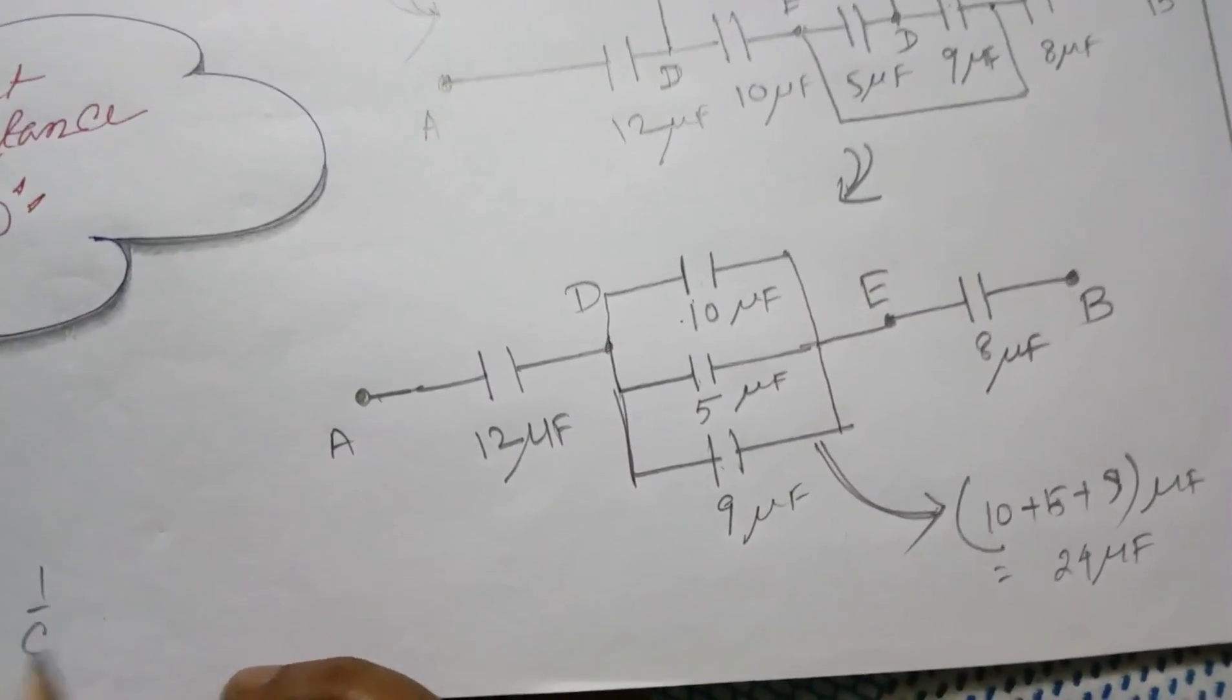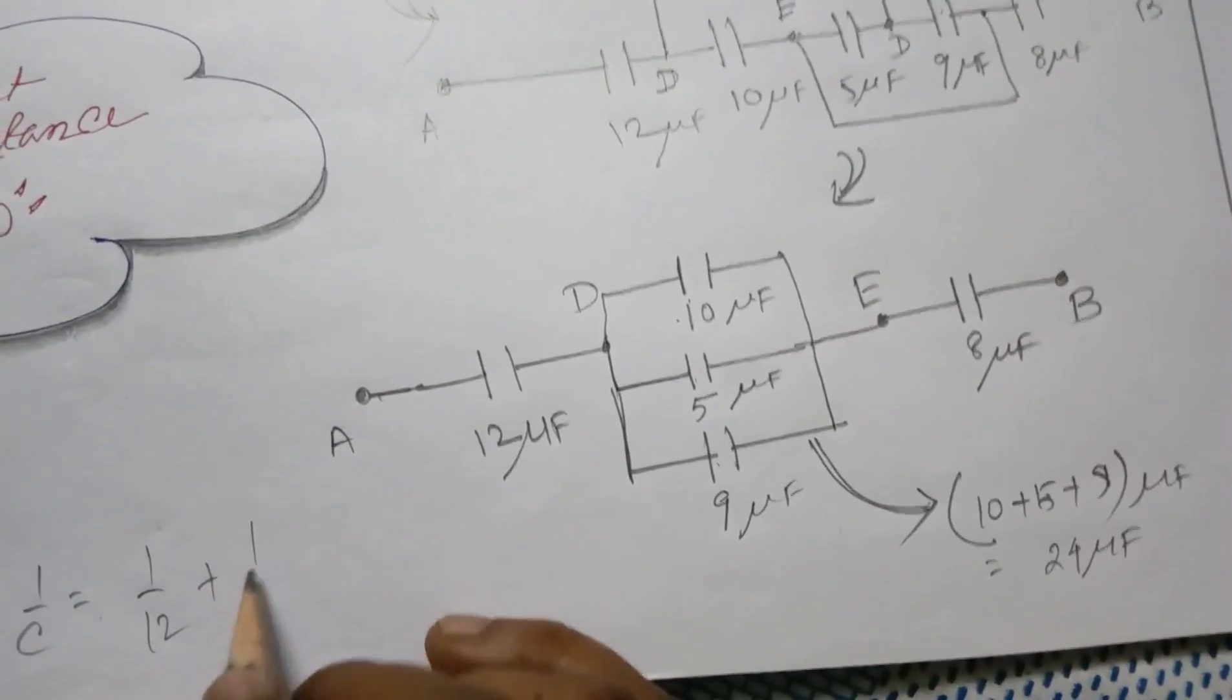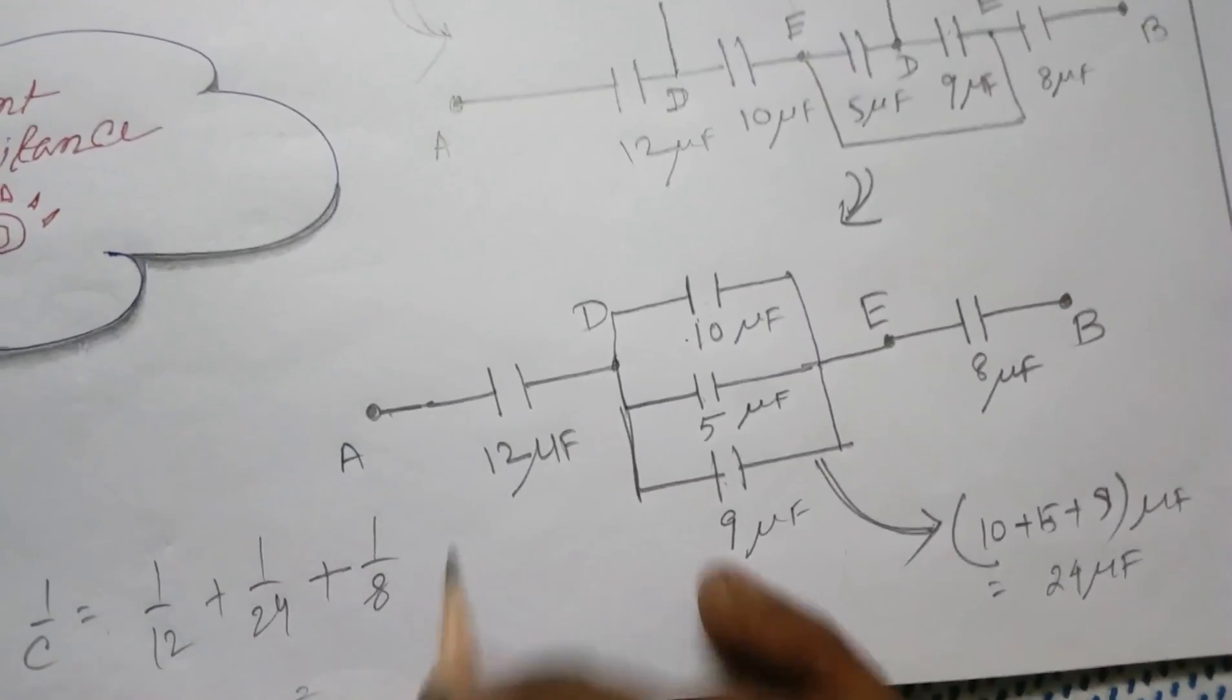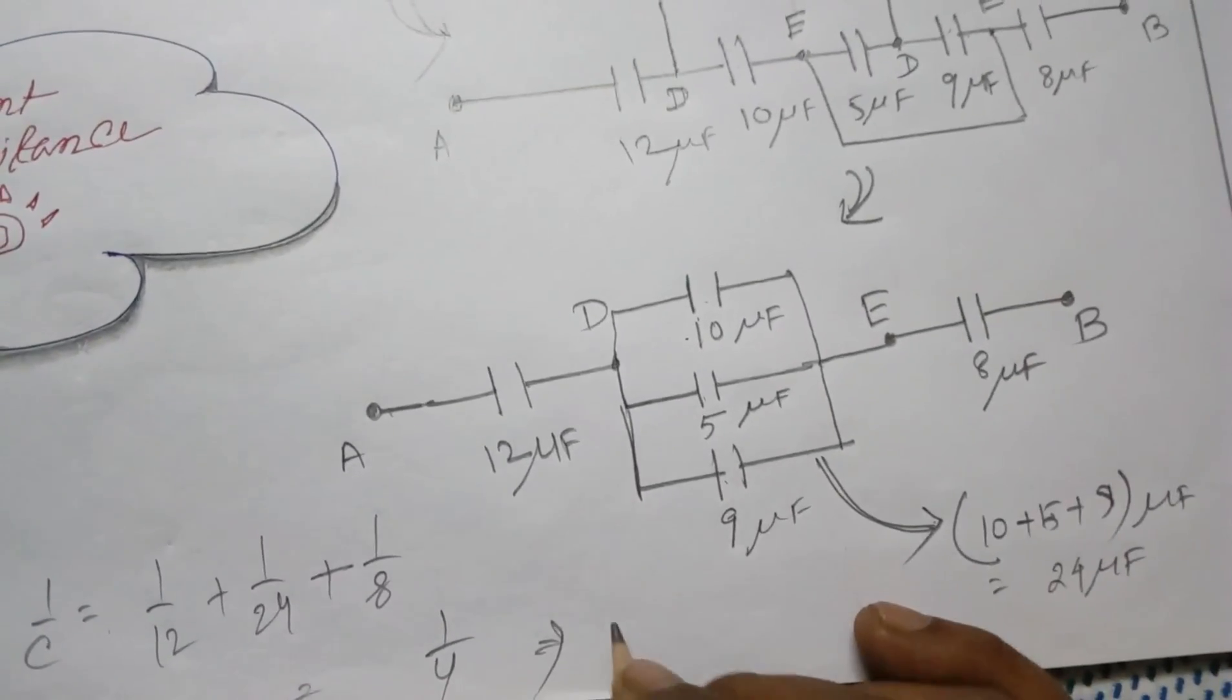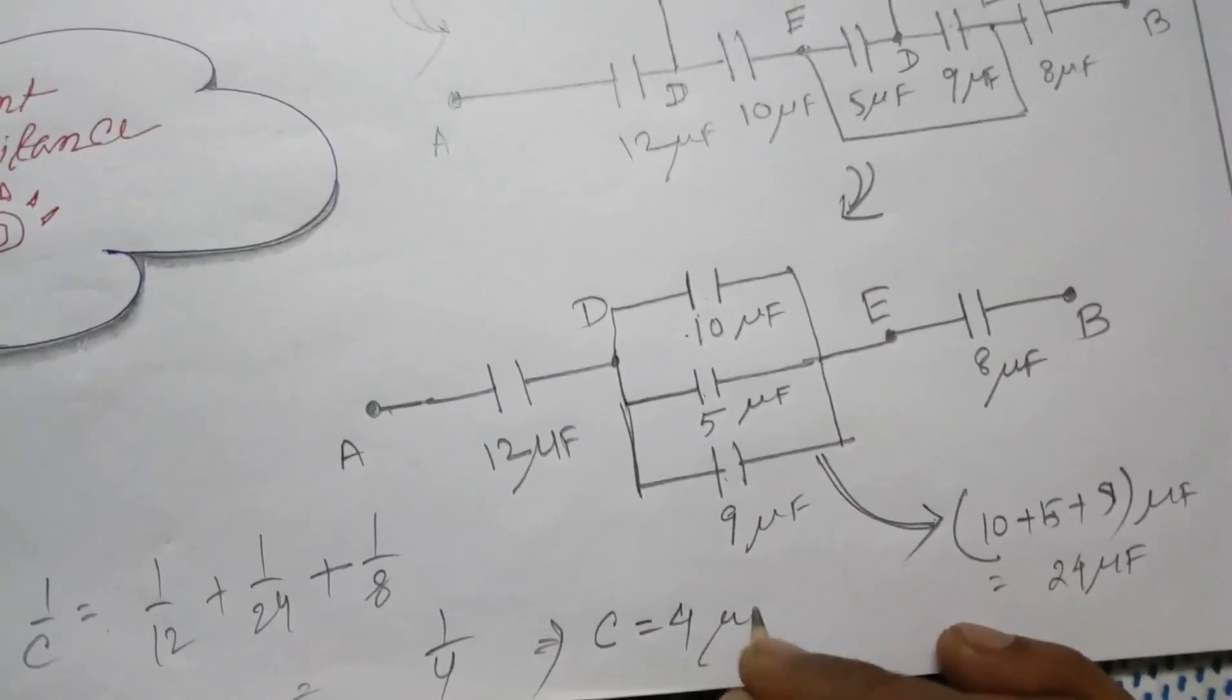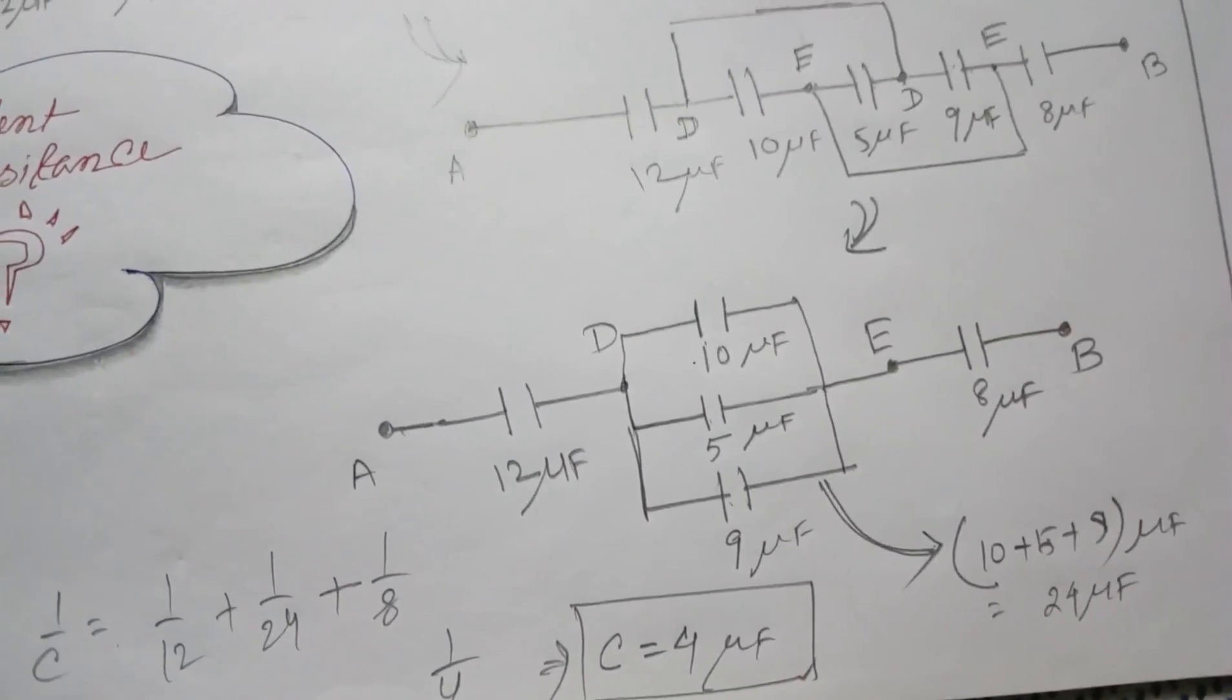And finally you have to find out the equivalent capacitance, suppose this is C. That will be 1 by 12 plus 1 by 24 plus 1 by 8, that will give you 1 by 4. So finally you will have C equals to 4 microfarad. You can calculate that. So isn't that so easy? Thank you.